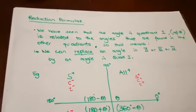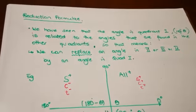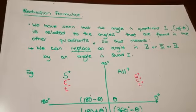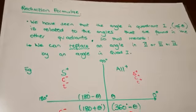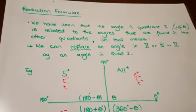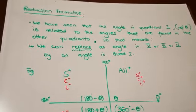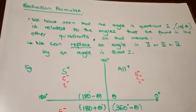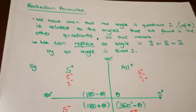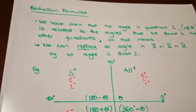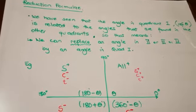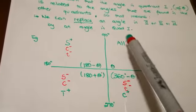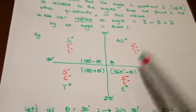Good day, grade 11s. Today we are going to look at reduction formulae. You have seen that the angle in the first quadrant is related to angles found in the other quadrants. So we can replace an angle that is in the second, third, or fourth quadrant with an angle that is in the first quadrant.